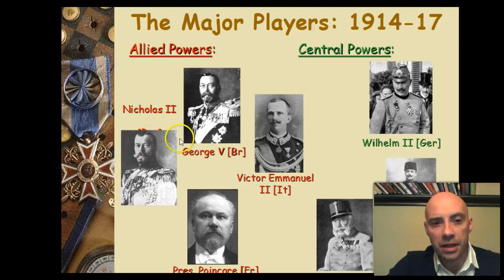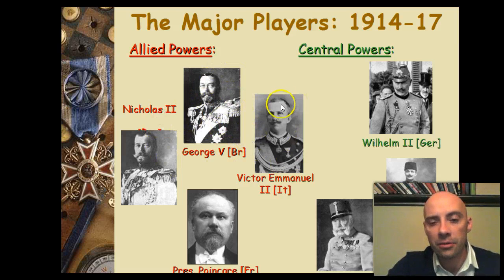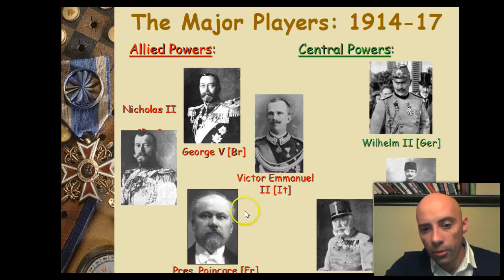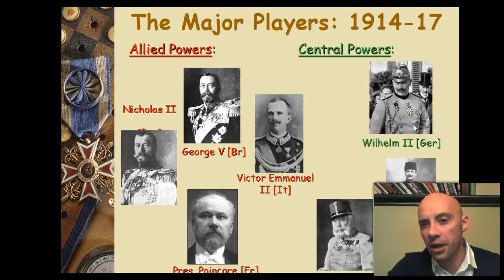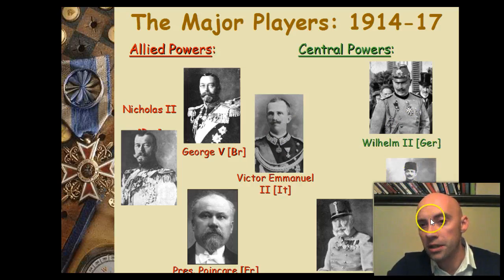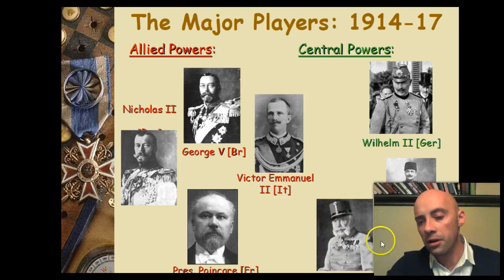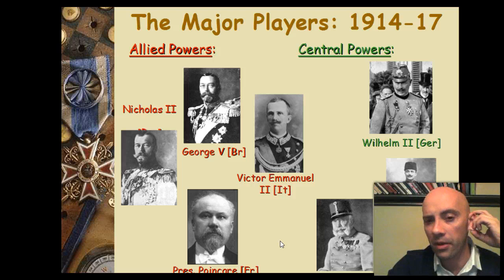These are some of the major players in the war. On the Allied side we can see Nicholas II, the Tsar of Russia; George V, the King of Great Britain; Victor Emmanuel, the King of Italy; and Poincaré, the President of France. For the Central Powers — what the Triple Alliance called itself once the war broke out — you have Kaiser Wilhelm of Germany; Enver Pasha, the grand vizier leading the Turkish government; and Franz Joseph, the Emperor of the Austro-Hungarian Empire, who was well into his 80s when the war broke out.